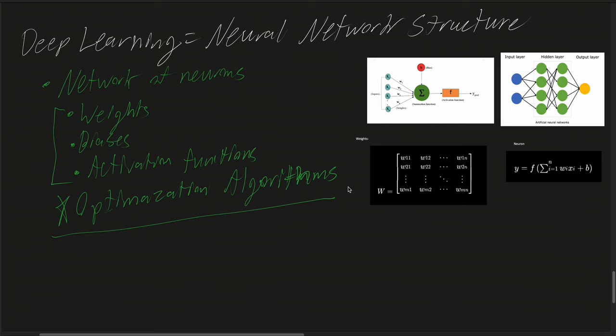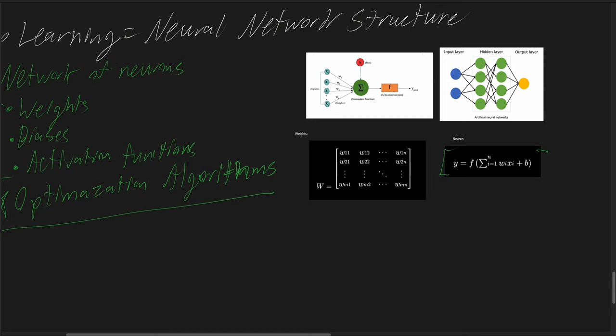Neural networks are comprised mainly of vectors for input, weights, biases, and activation functions. To give a breakdown of neurons: neurons, or nodes, are individual processing elements of a neural network. Like the human brain's neurons which fire off electrical signals, these artificial neurons receive input, process it, and pass on the output.